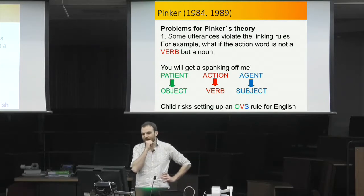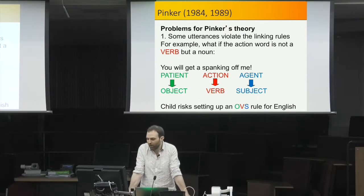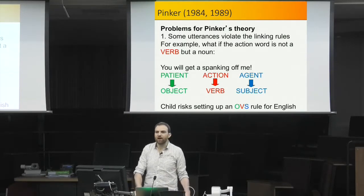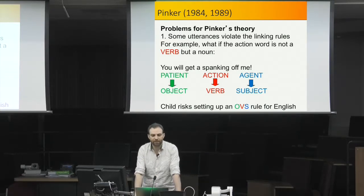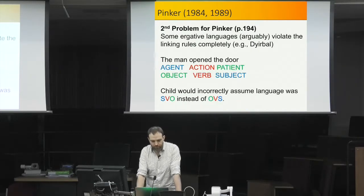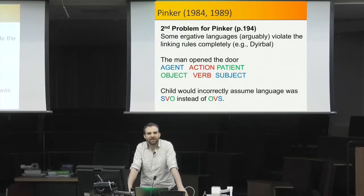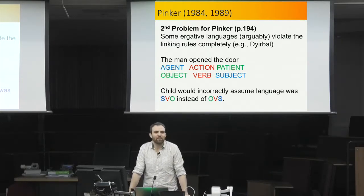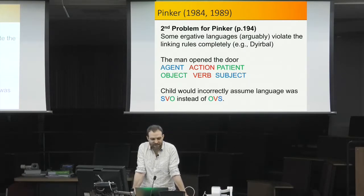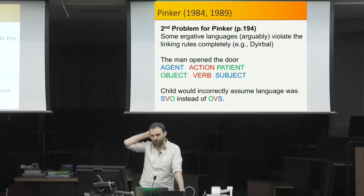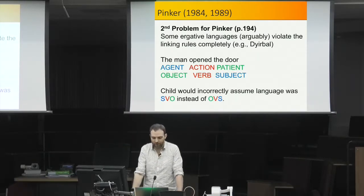Pinker acknowledges that if a child heard a non-canonical sentence like 'you will get a spanking off me,' they might risk reading off an incorrect rule; but in the 1987 version of the theory he argued that making learning more probabilistic solves this — children aren't doing one-shot learning from individual sentences. A second problem is that some ergative languages arguably violate the linking rules for at least some sentences, where it's not always true that agent is subject, action is verb, and patient is object.